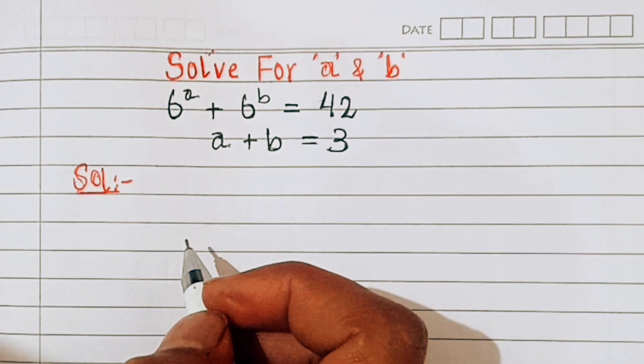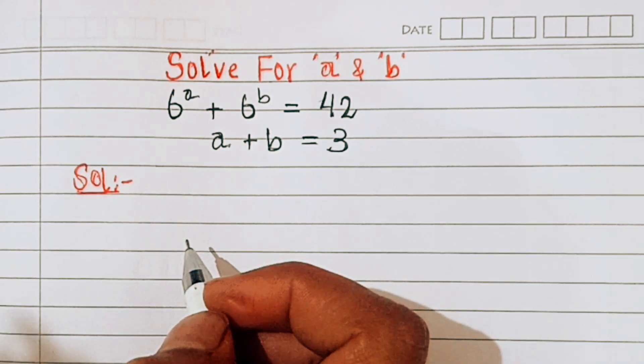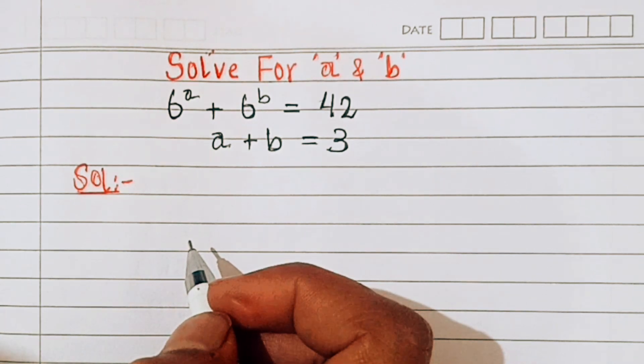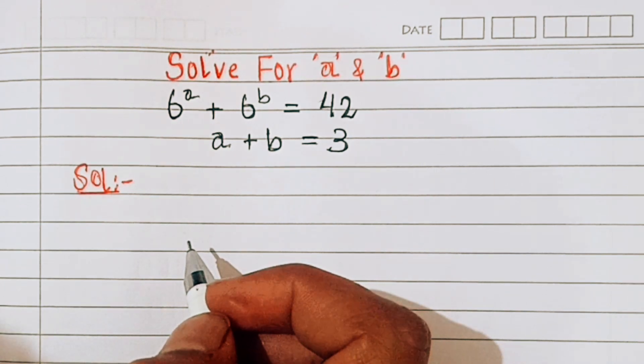Hello. We have 6 power a plus 6 power b equal to 42, and a plus b equal to 3. We will solve this for a and b.